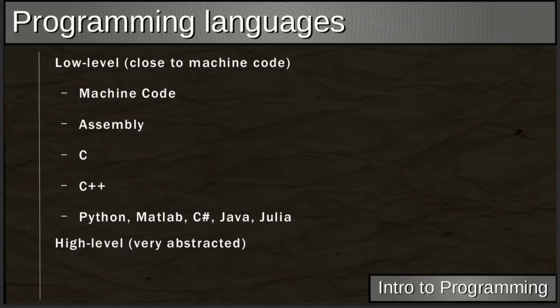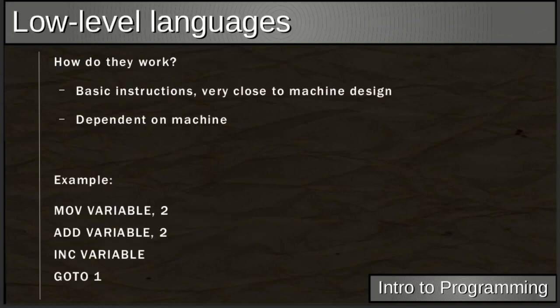Low-level languages include machine code and assembly. High-level starts at C, going up to C++, Python, MATLAB, C#, Java, and Julia — very abstracted languages that are quite close to our understanding of how to explain operations to a computer, whereas machine code is very close to how the hardware manages things.